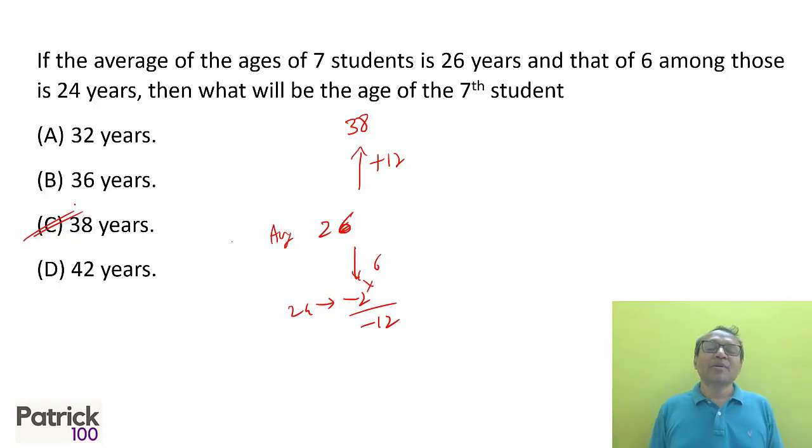You can do it by a simple average concept, but there is a way to solve a lot of sums quickly in averages where you assume that around the average, total is 0. So 6 people are minus 2, that is minus 12 totally. Last person has to be plus 12. 26 plus 12 will give you 38 years.